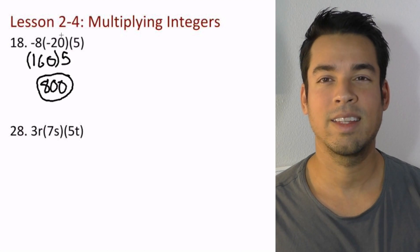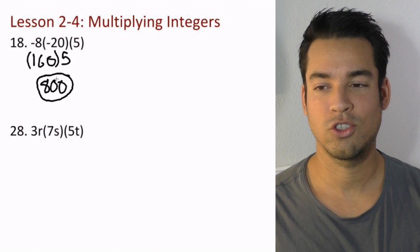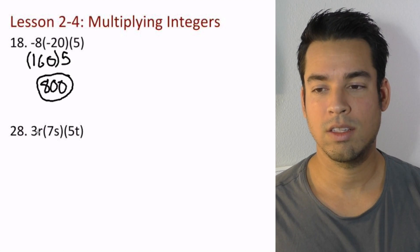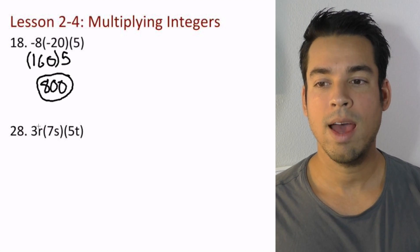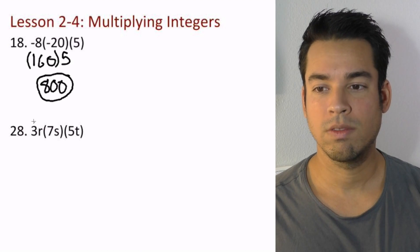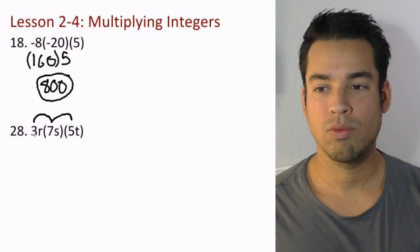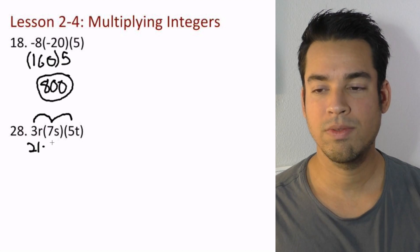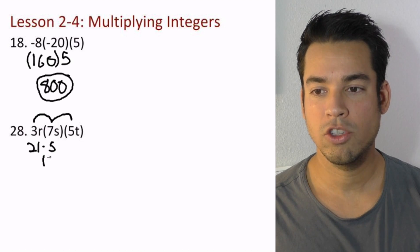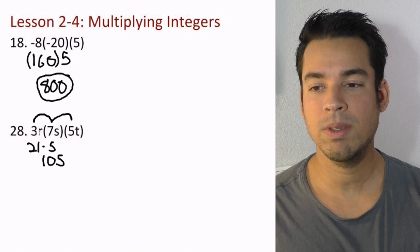Let's go on to problem 28. Now we're combining all of these guys and multiplying them together. When we have a bunch of integers like this, these guys all combine: 3 times 7 is 21, times 5 is 105.